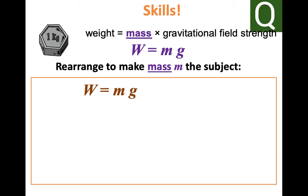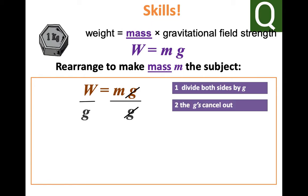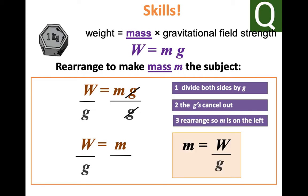With the same principle that applies to make mass the subject, we are going to divide both sides by gravity, cancel them out, and then we are left with mass equals weight divided by gravity.